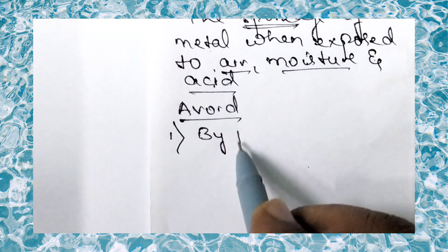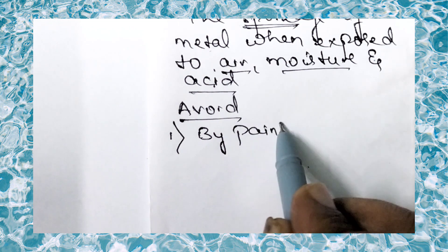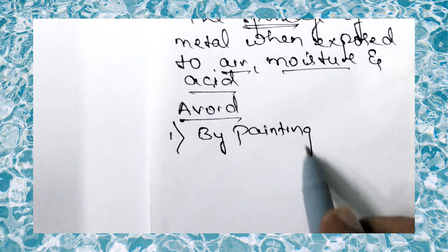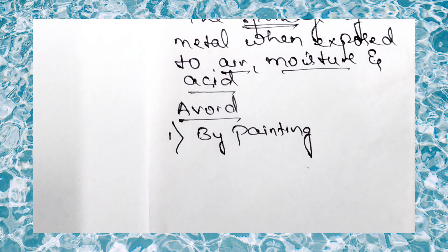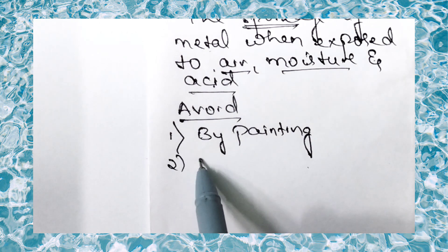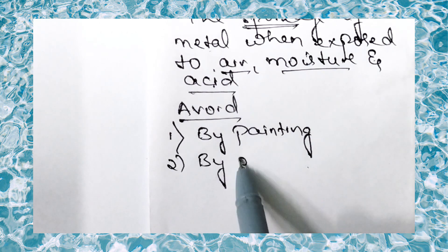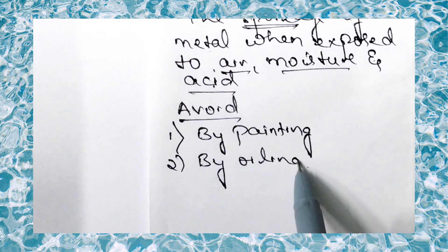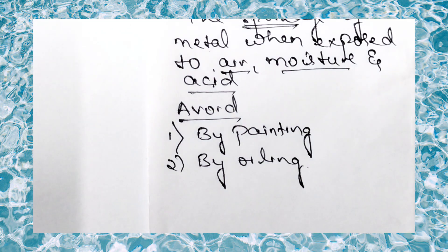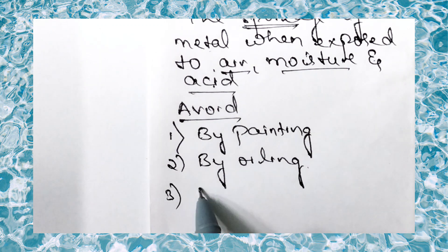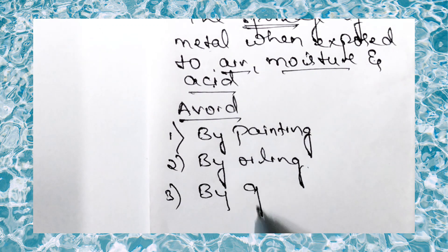To avoid corrosion, we can use painting. We can also use oiling — for example, oiling a cycle chain prevents corrosion. Another method is greasing.